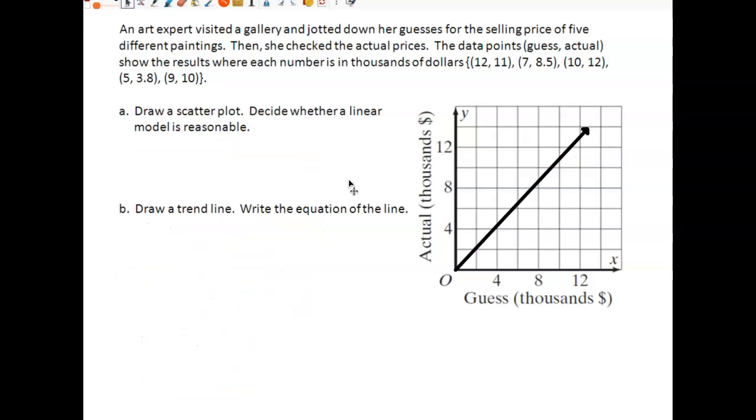An art expert is visiting a gallery and jots down the guesses for five different paintings. So the data in this table can be used to look at or examine the art gallery expert's data. So, plot those points. We're going to plot the point 12, where 12 is our guess and 11 is the actual. So we will plot the point 12, 11.